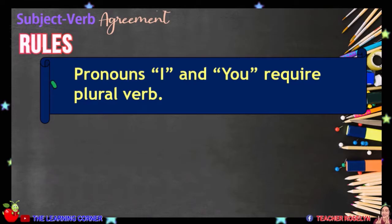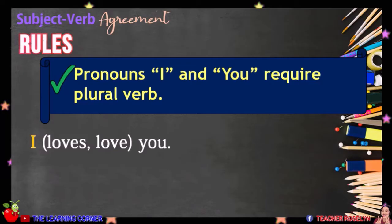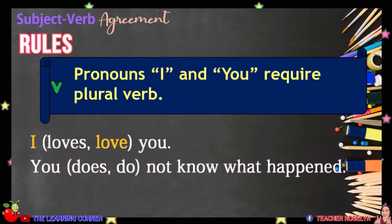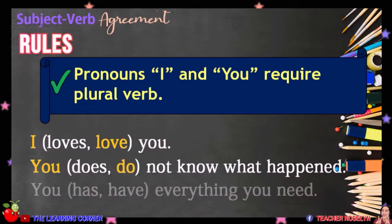In every rule, there is always an exemption. Pronouns I and YOU always require a plural verb, even though they refer to a singular person. For example, I love you. The base form or plural form of the verb is always used for the first person pronoun I. You do not know what happened. You have everything you need.